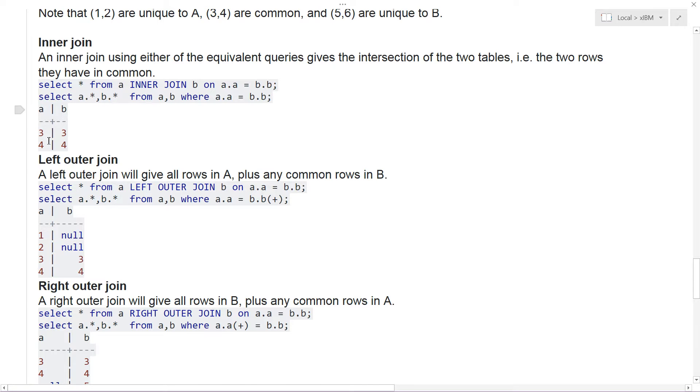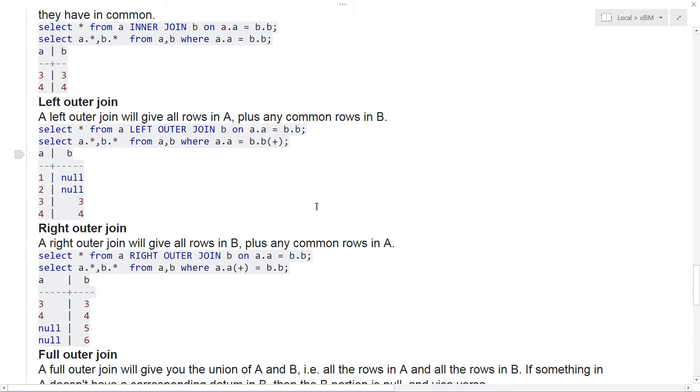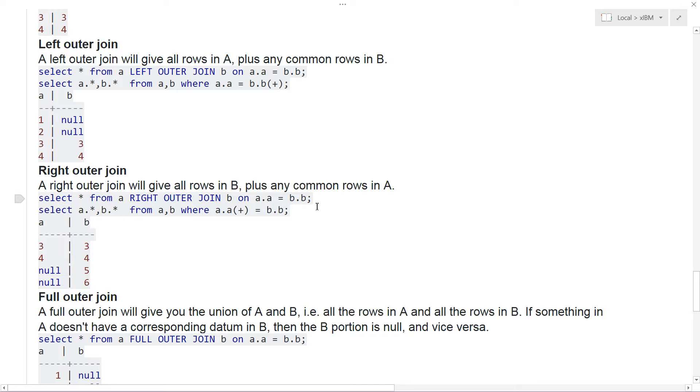If you do a left outer join, a left outer join will give all rows in A plus any common rows in B. So you have everything in A is basically going to be listed. If it's not in B, you'll see that listed as null. And then whatever is common will also be shown, so three and four. That's a left outer join. Left because A came first, honestly. If A is listed here, that is the one that is left.